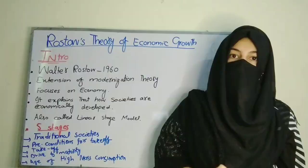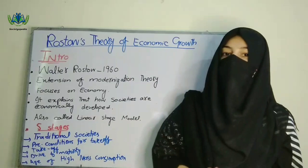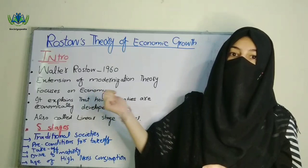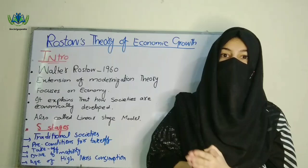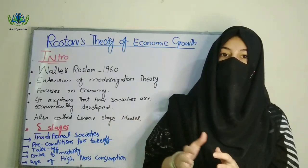Introduction: Rostow's theory is an American economist's theory from the 1960s on economic growth. This is a modernization theory, but basically it is focused on the economy. Rostow has explained in this theory which societies are economically developed over time. It is called the linear stage model and it is divided into five stages.